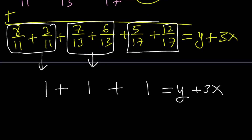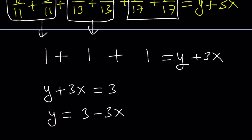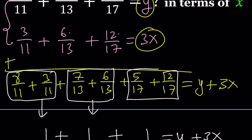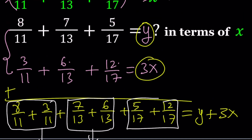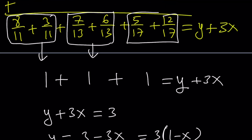We have y + 3x = 3. Since our goal is to find y in terms of x, we can write y = 3 − 3x. You could also write it as 3(1 − x). That also tells us if we subtract x from 1 originally and then multiply by 3, we're going to get the answer.